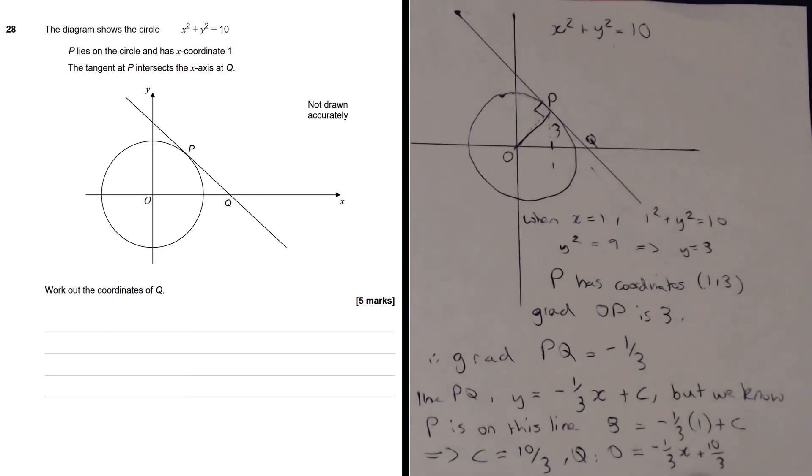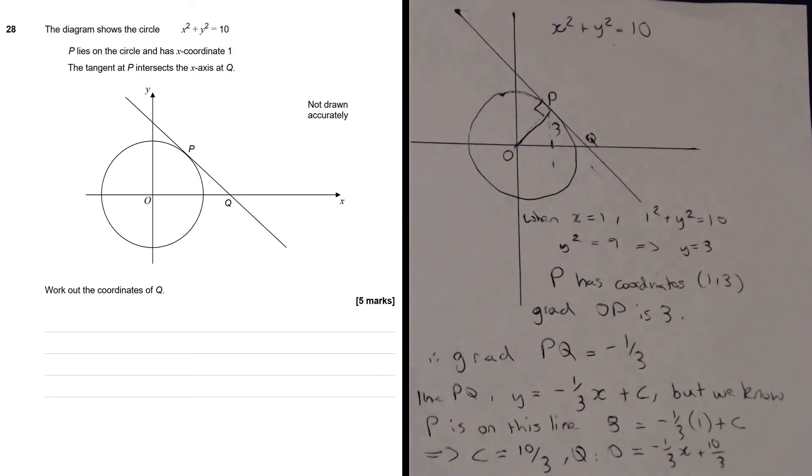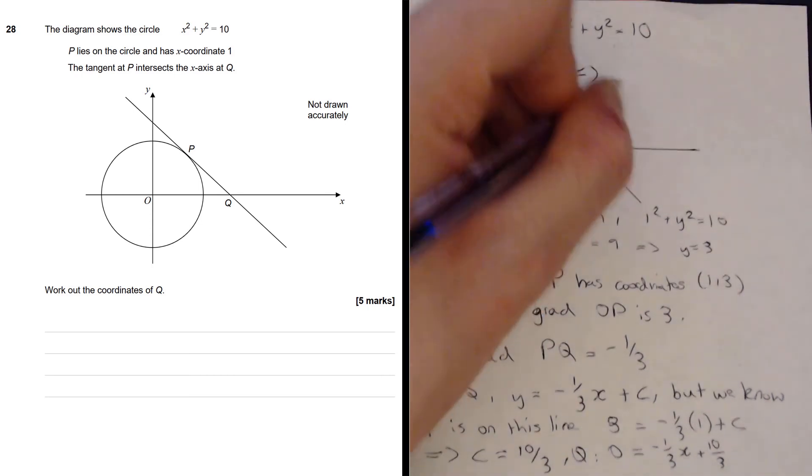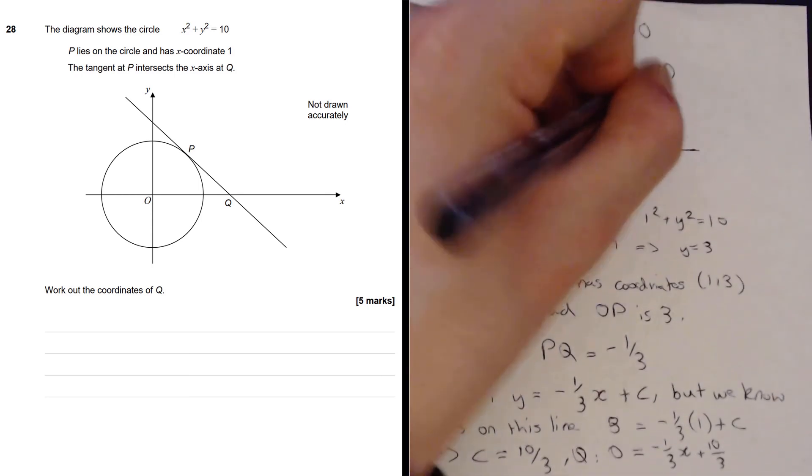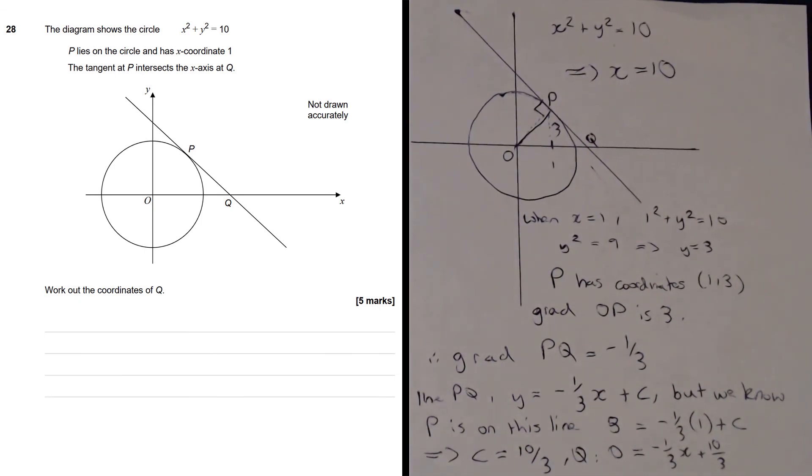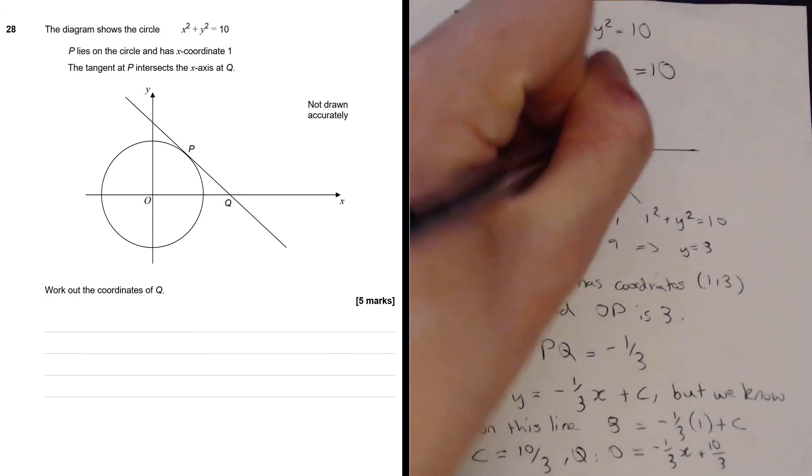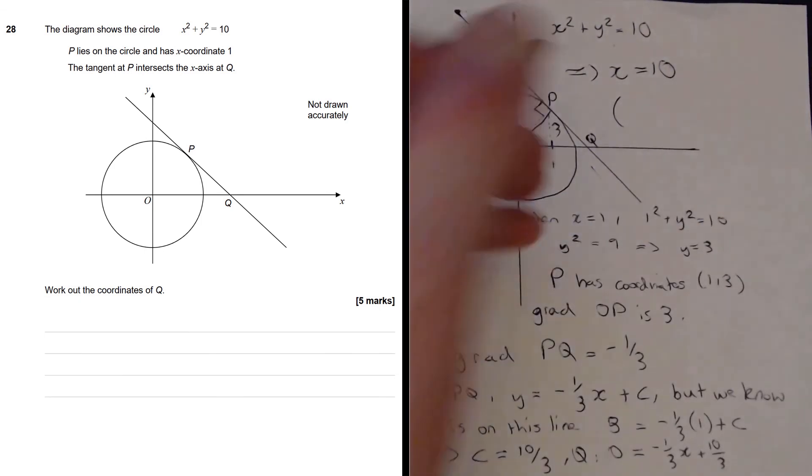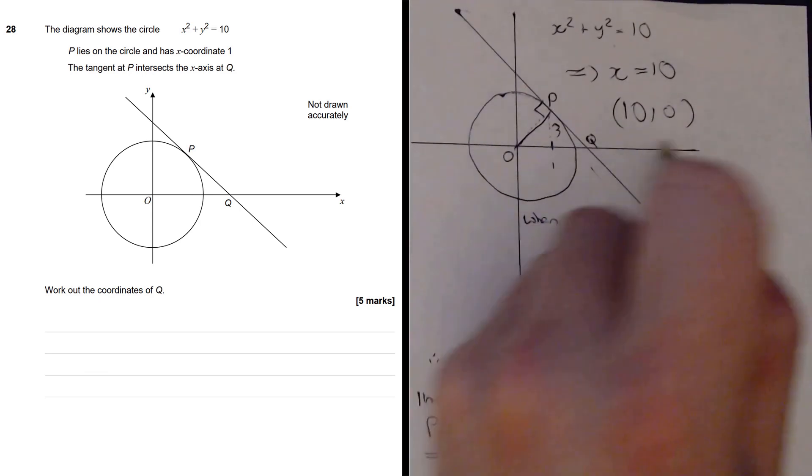And if we rearrange that, we are going to get that x equals 10. But now we need the coordinates. We know that the y coordinate is 0, so the coordinates of Q are going to be 10, 0.